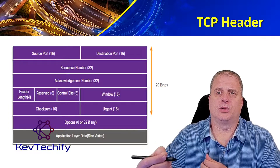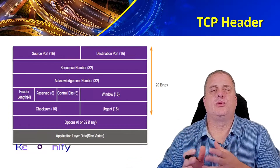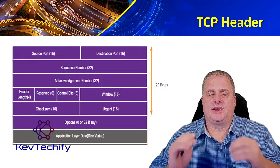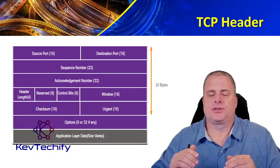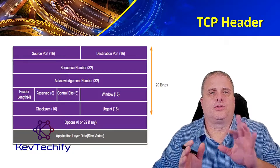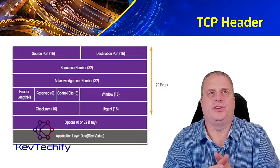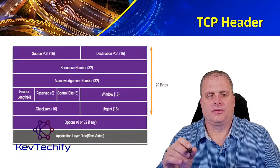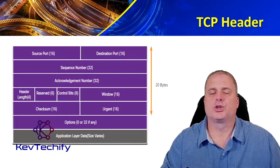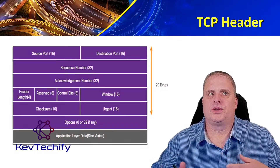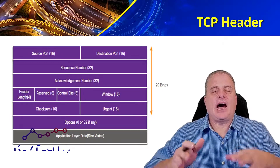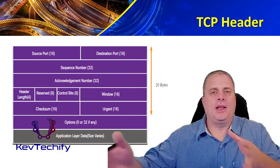The next field is the sequence number, which indicates the order in which that data needs to be reassembled. The acknowledgement number is a 32-bit field that indicates that the data has been received and the next byte expected from the source. The header length, also known as the data offset, is a 4-bit number that identifies how long this header field is. Then we have a reserved field of 6 bits — that's for future use. And then we have control bits, which indicate the purpose and function of this TCP segment. Then we have the window size, which is 16 bits long and indicates how much data can be in transit at one time.